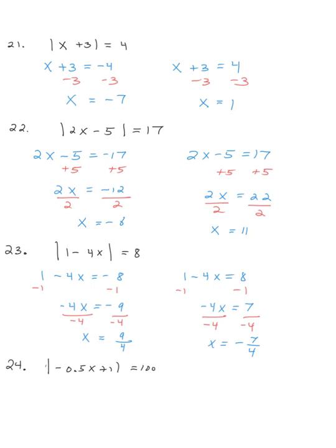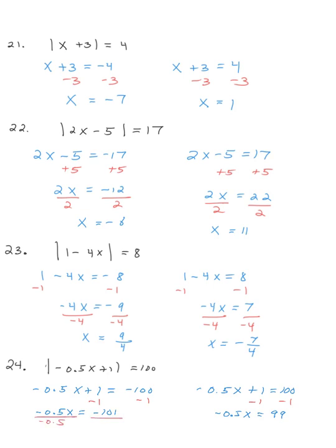The absolute value of negative 0.5x plus 1 gives us negative 0.5x plus 1 equals negative 100, and also equals positive 100. Subtracting 1 gives negative 0.5x equals negative 101, versus negative 0.5x equals 99. Dividing by negative 0.5 is the same as doubling — dividing by a half means multiply by 2. So on the first equation, doubling 101 gives x equals positive 202. On the second, doubling 99 with the sign change gives x equals negative 198.